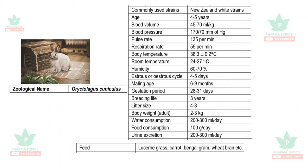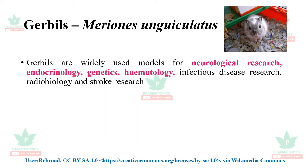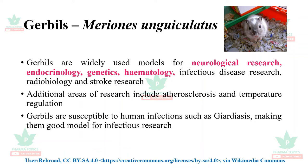Gerbils, Meriones unguiculatus, are widely used models for neurological research, endocrinology, genetics, hematology, infectious disease research, radiobiology, and stroke research. Additional areas include atherosclerosis and temperature regulation. Gerbils are susceptible to human infections such as giardiasis, making them a good model for infectious disease research.